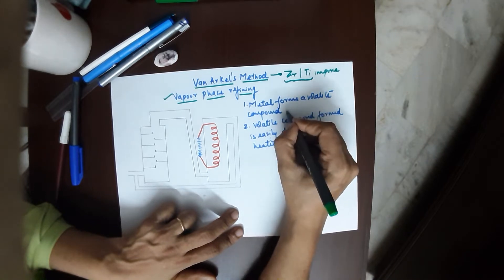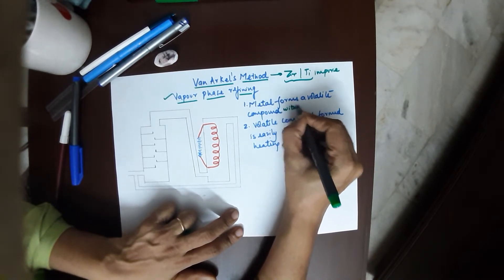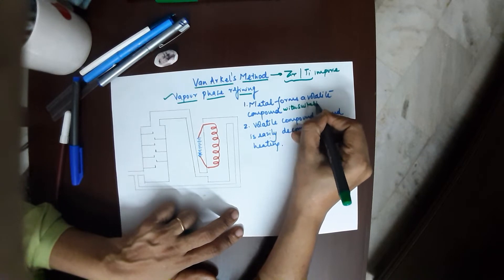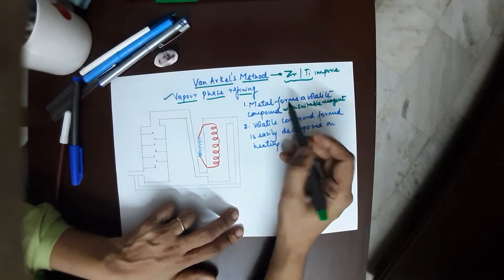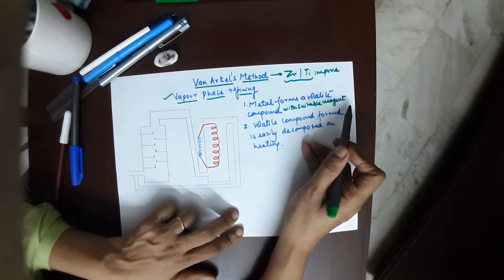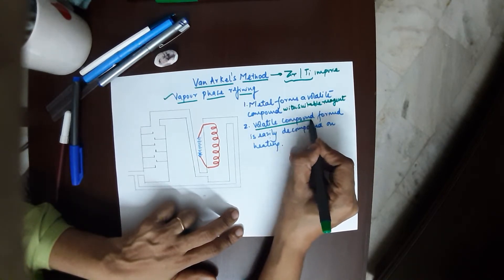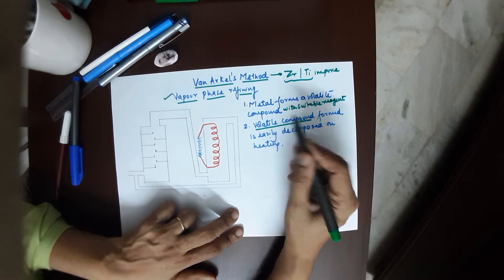This suitable reagent should not be too expensive. The metal forms a volatile compound with a suitable reagent, and this volatile compound which is formed is then taken to the other chamber.